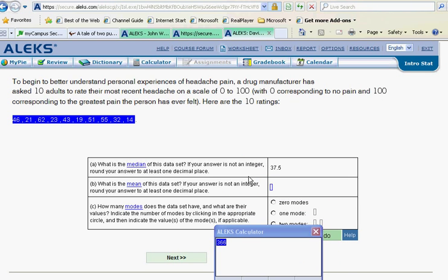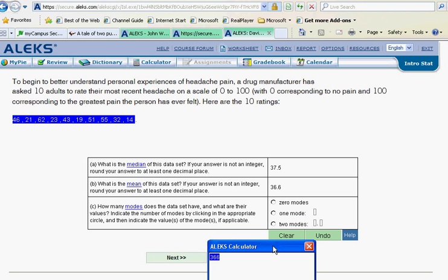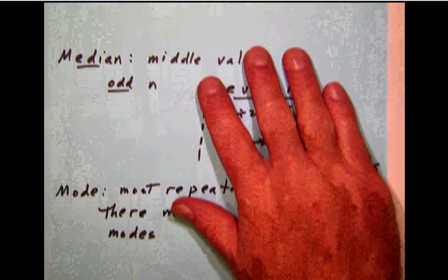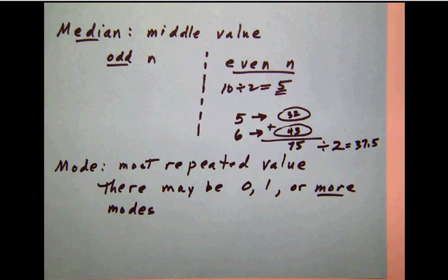And on the last question then, the question about the modes. On modes, we need to review here that the mode basically is the most repeated value on the list. Just keep in mind that if there are no numbers repeated, there might not be a mode. There might be one mode or there could be multiple modes. So we'll have to look carefully to see what situation we're dealing with here.